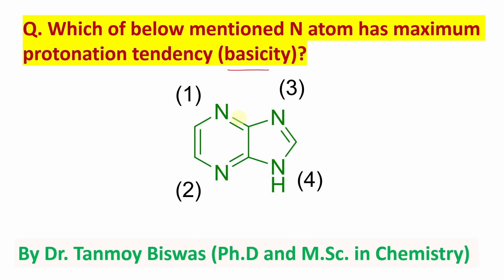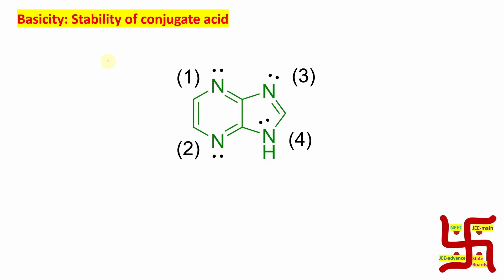Whenever a question about basicity is asked, you need to check the stability of the conjugate acid (CA). What does conjugate acid mean? You can say protonated form. So the question is about which nitrogen will undergo protonation most easily. Before going to that protonation, you need to know a little bit about the lone pairs, because the lone pair of nitrogen will participate in protonation.